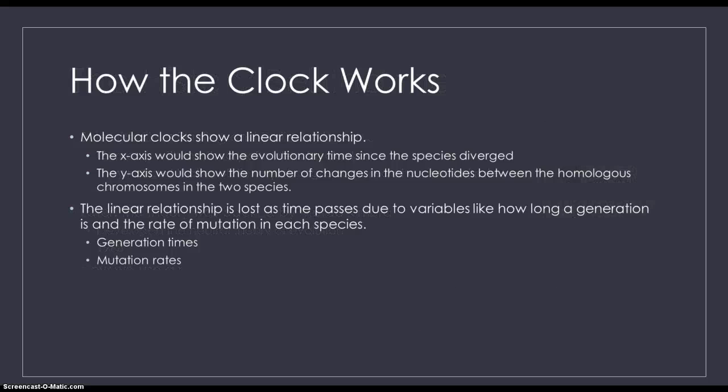So how does the clock work? A molecular clock is a graph that shows a linear relationship. The independent variable would be time in millions of years since the species diverged. The dependent variable would be the number of changes in nucleotides between the homologous chromosomes in the two species. Of course, the relationship is not always going to be linear. As time passes, different generation times and mutations may cause the relationship to become more and more non-linear.